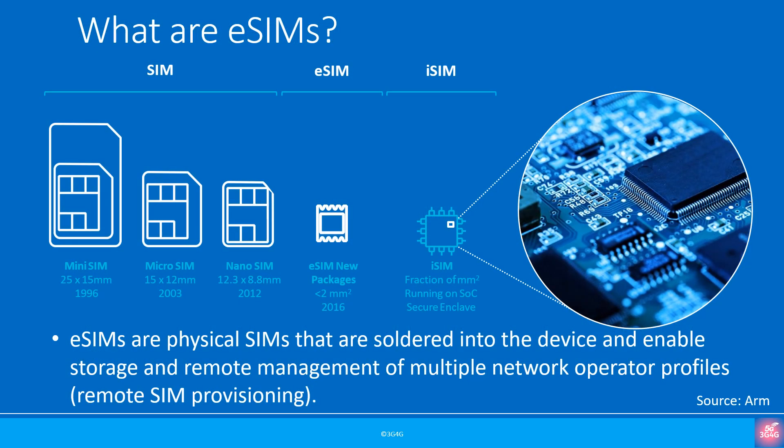eSIMs are physical SIM cards that are soldered into the device and enable storage and remote management of multiple network operator profiles. Think of an electronic toy that has this eSIM — when you buy it, the manufacturer decides which operator it connects to, based on their agreement with an operator in the country. They may be selling the same device in multiple countries or allowing roaming between certain countries. The manufacturer will need a way to remotely provision the SIM so it connects to the right operator, which is one of the most important requirements of eSIM and iSIM.